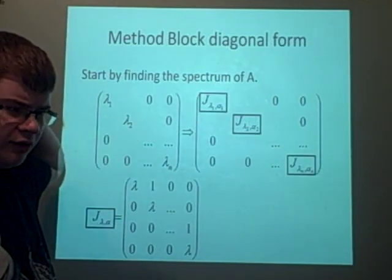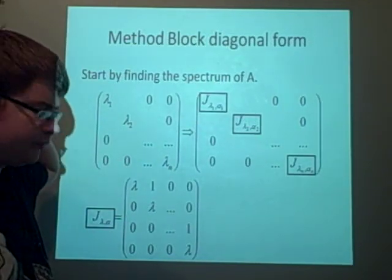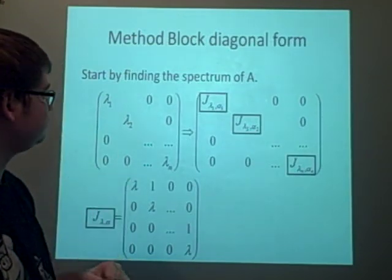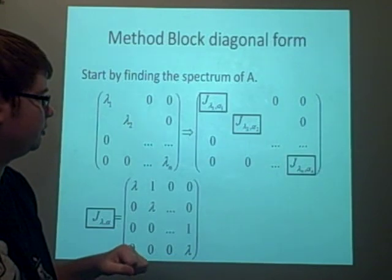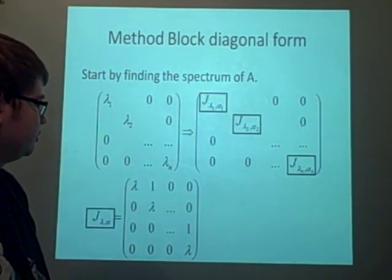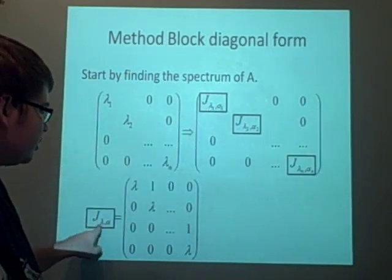So if you have the eigenvalues 1, 1, and 2, so 1's repeated, then the spectrum is just 1, 2, because we don't repeat them. We're just finding the spectrum is the number of eigenvalues, unique ones.